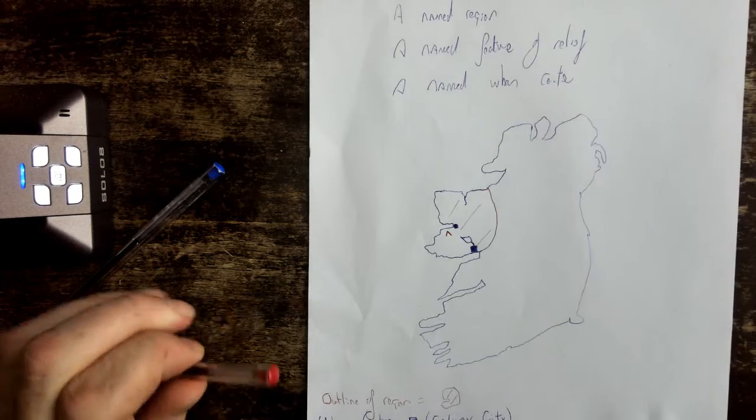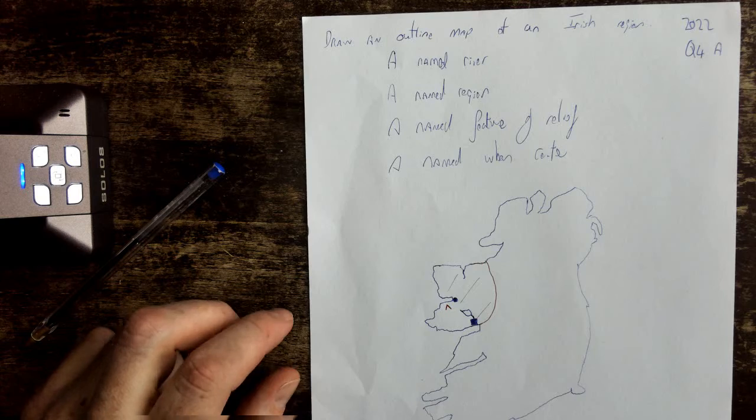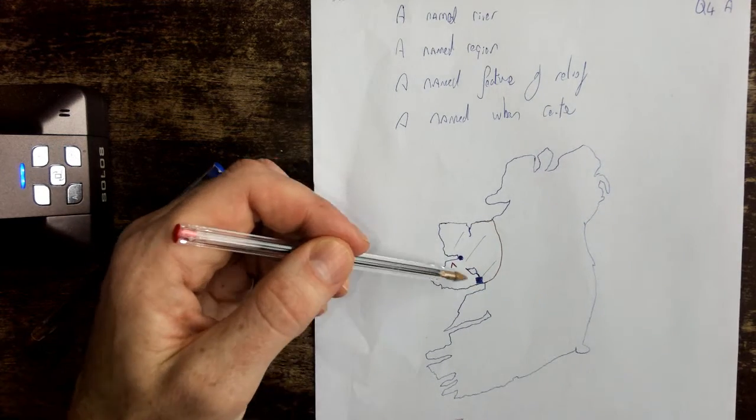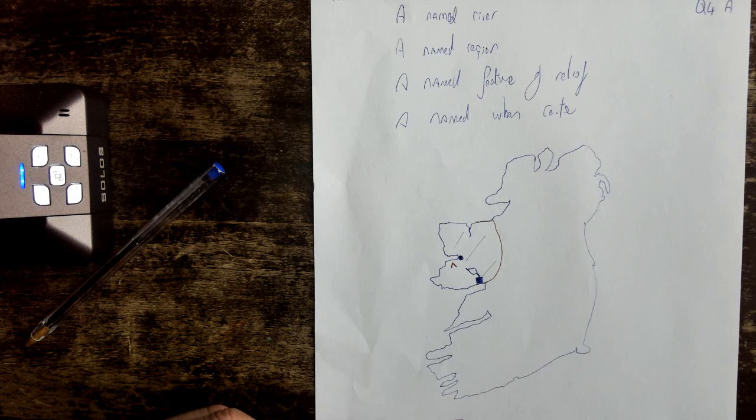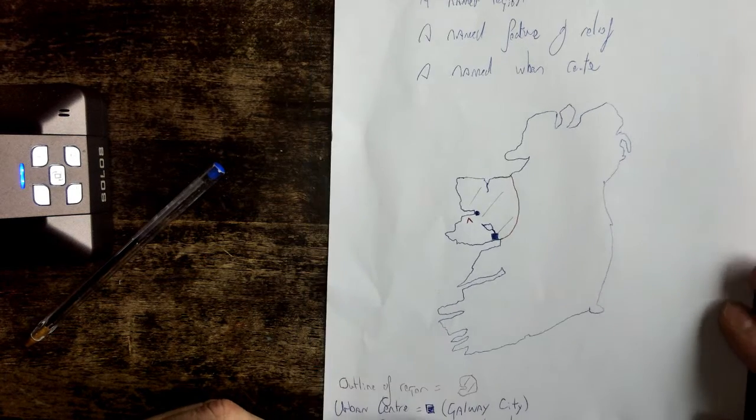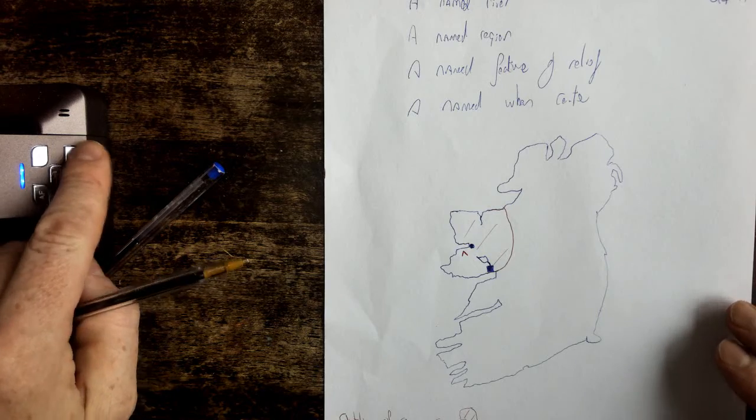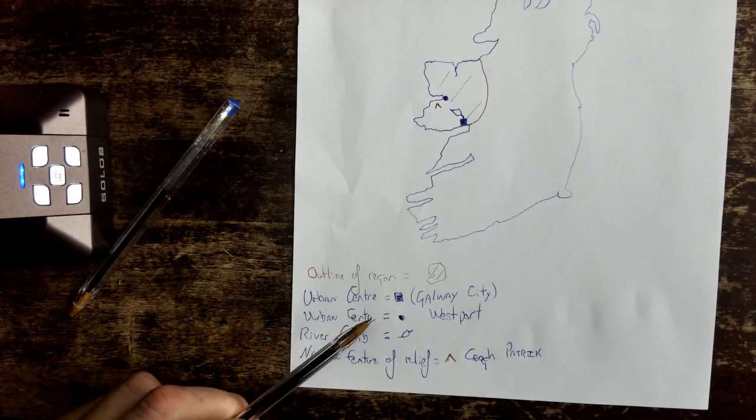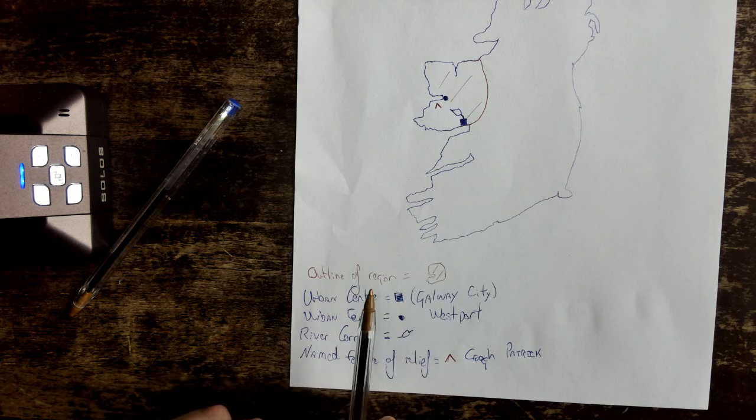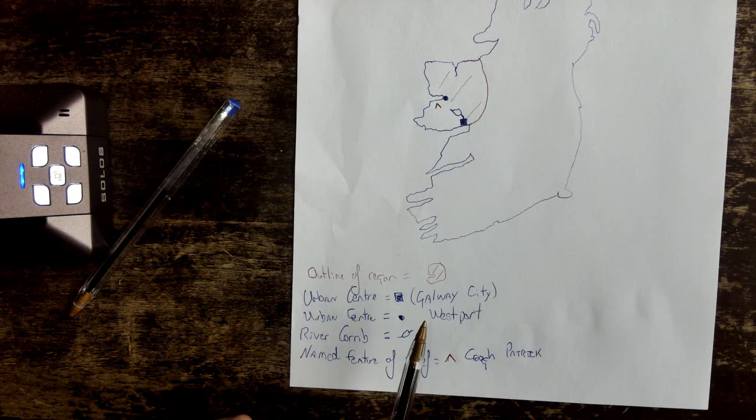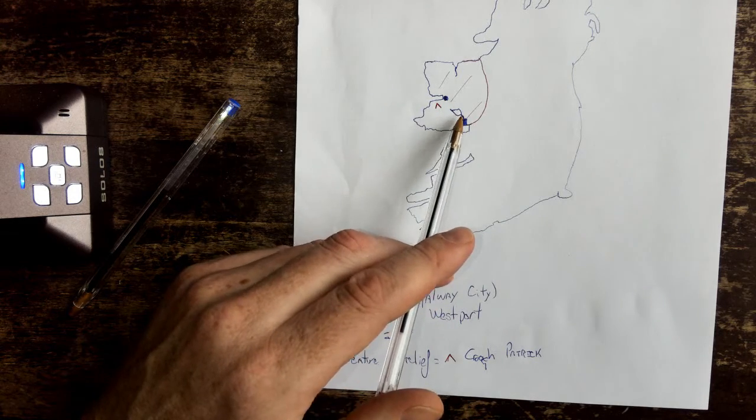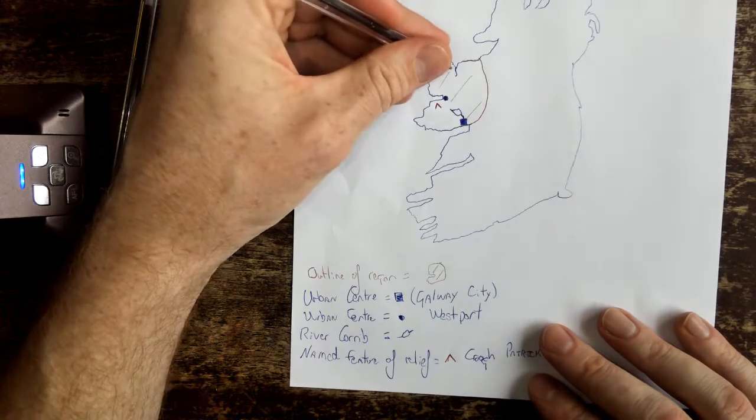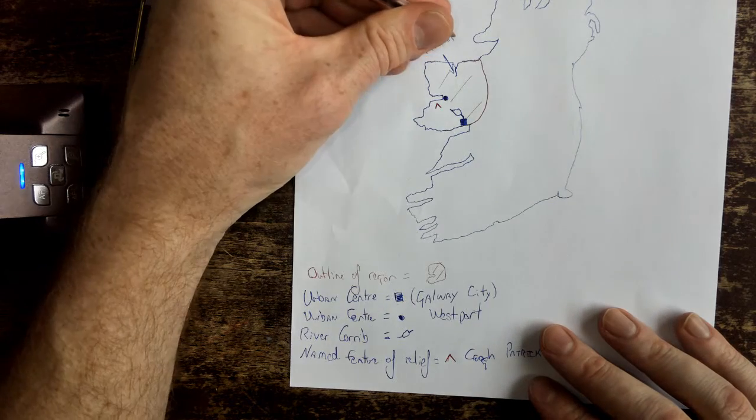So that's it, that's how you do that question. The question is again, draw an outline map of an Irish region, give the outline of the named region, give a named river, a named feature of relief, and a named urban centre. And I've drawn the outline of the region, and that's the outline of the region. The urban centre is Galway City, and the second urban centre is Westport. And the river Corrib is my river. If anybody wants, they can do the river Moy, which is up here.